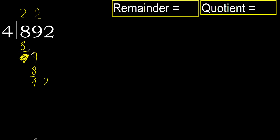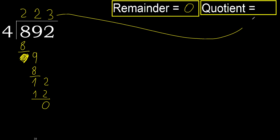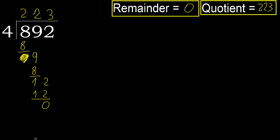Bring down 2 to get 12. 4 multiplied by 3 is 12 — 12 is not greater. Subtract. Next, there is no remainder, therefore finish it. Therefore 892 divided by 4 equals 223.